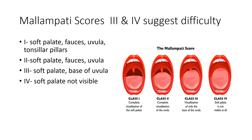Mallampati scores 3 and 4 suggest difficulty. If you have other non-reassuring findings, you may need to make sure you have help available, and you may think differently about the depth of sedation you will tolerate — discuss this with the proceduralist. Mallampati 1 is where the soft palate is completely visualized. Two — you can't see the tonsillar pillars. Three — you can't see the entire uvula. And four — they open their mouth and it just looks like tissue.